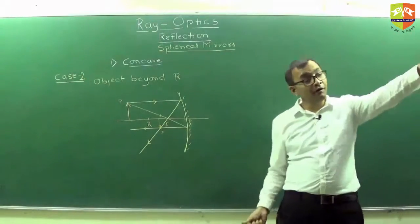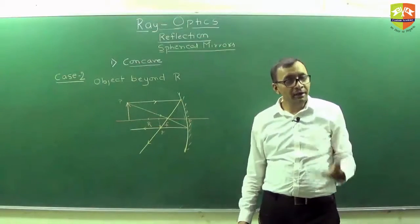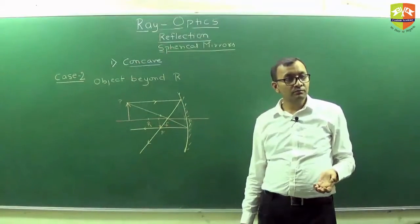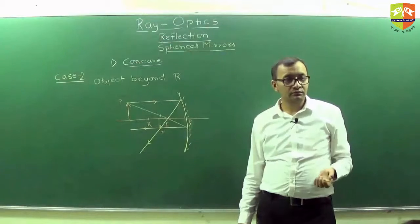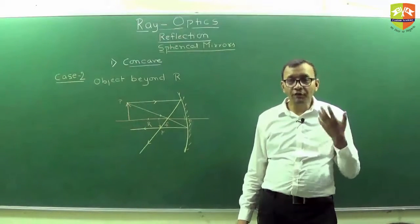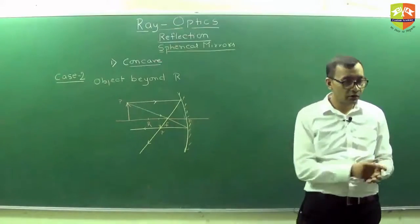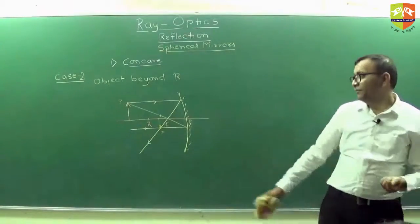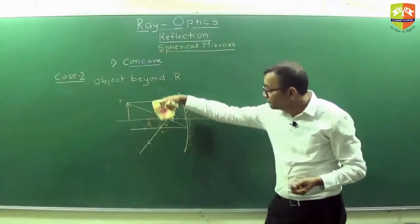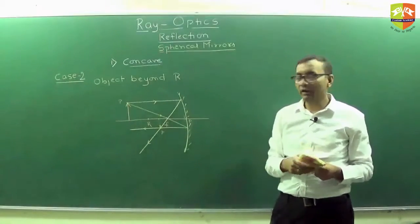So the object is travelling from infinity to R, but image is only travelling from F to R. So the speed of image is very slow. Are you getting it? If you put the object at R and R, image will be on R only.